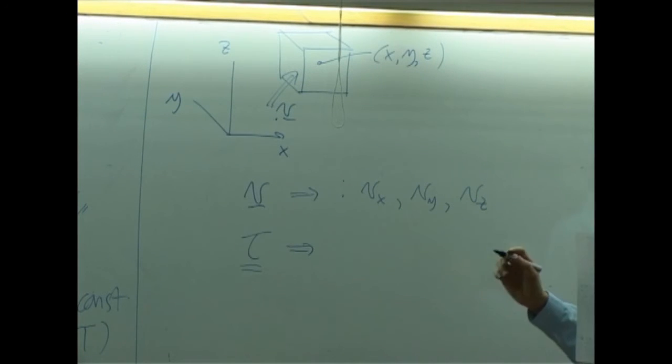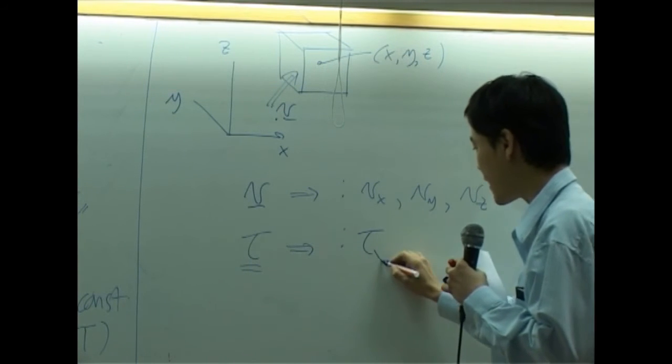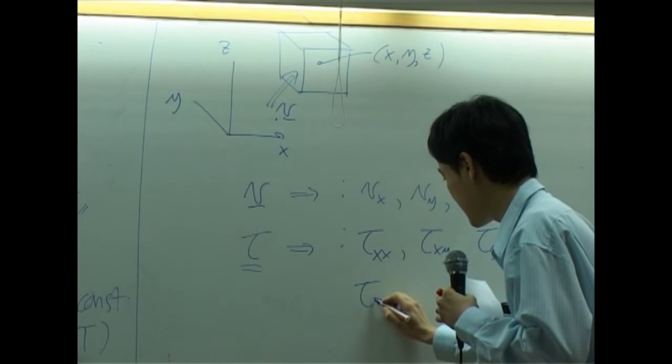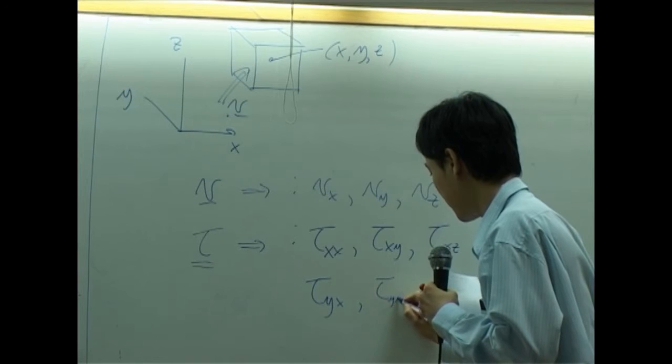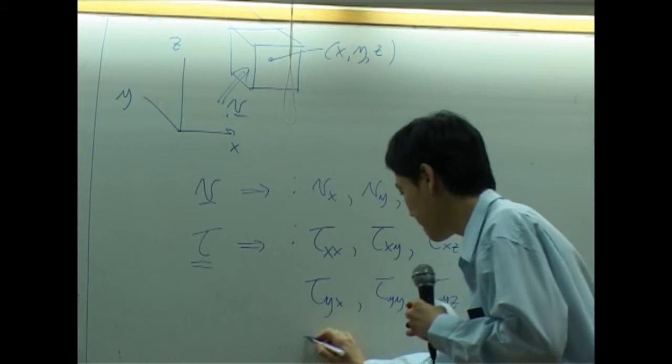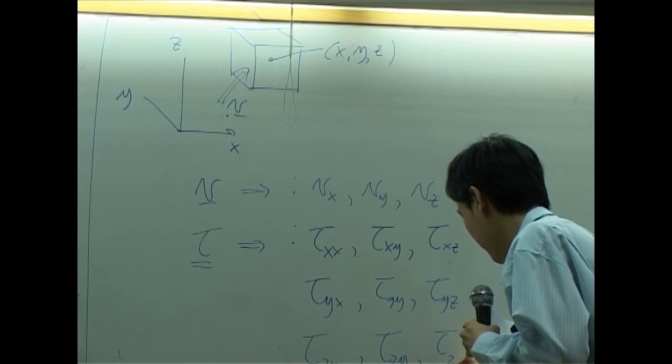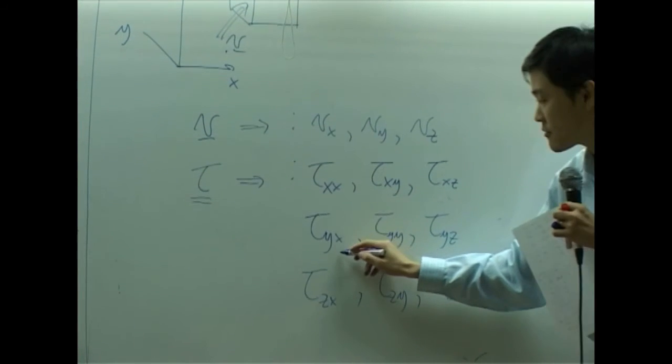Tensor is supposed to have nine components. So its components would be in Cartesian: it would be tau_xx, tau_xy, tau_yx... All right.